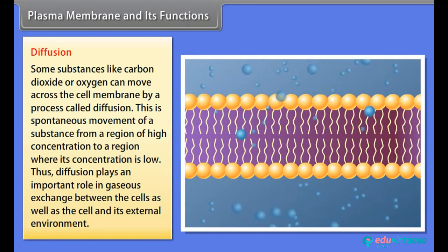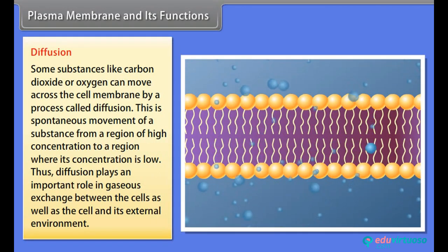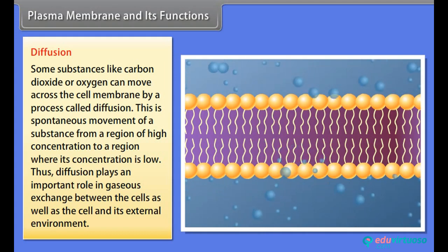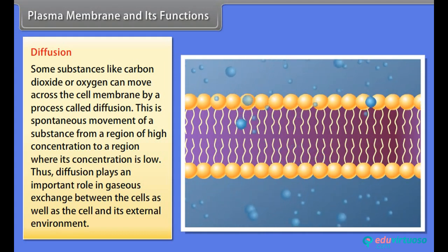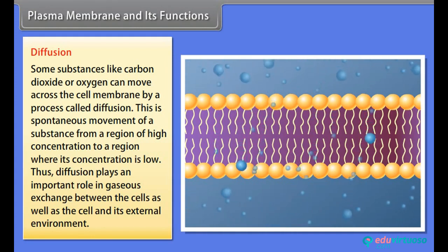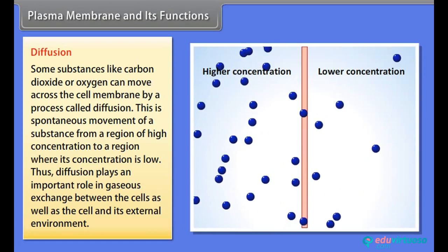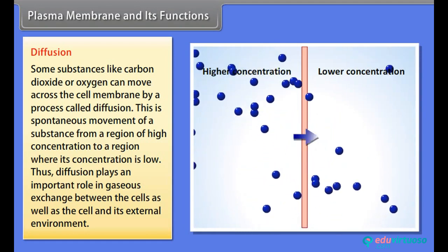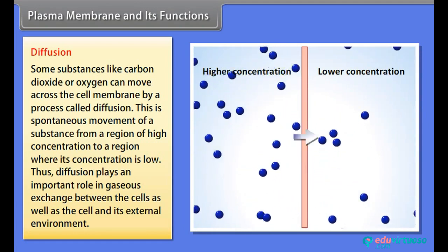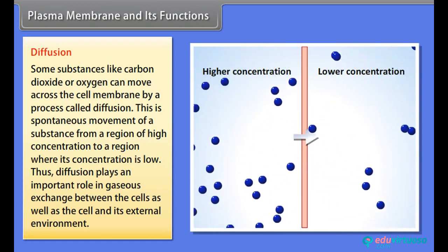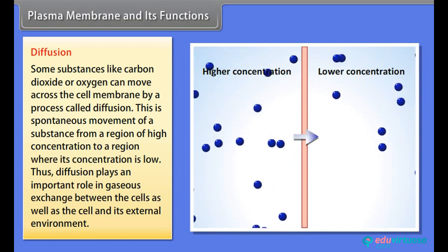Some substances like carbon dioxide or oxygen can move across the cell membrane by a process called diffusion. Diffusion is the spontaneous movement of a substance from a region of high concentration to a region where its concentration is low. Diffusion plays an important role in gaseous exchange between cells, as well as between the cell and its external environment.